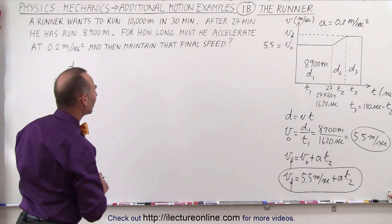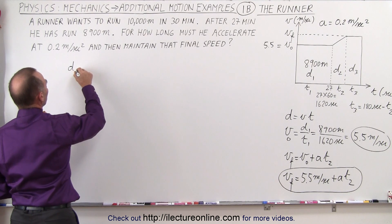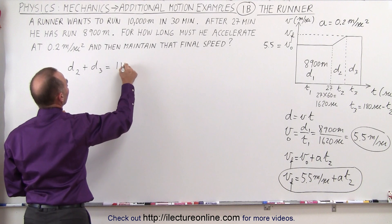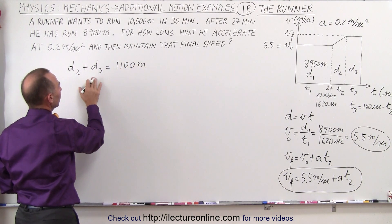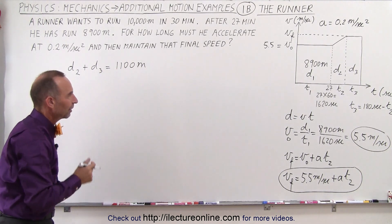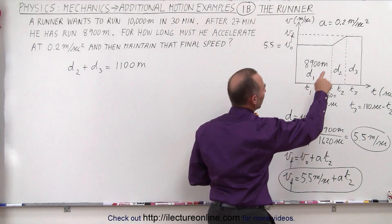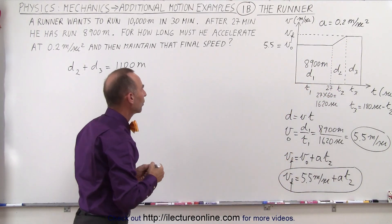Once we do that, we can say that distance 2 plus distance 3 is equal to 1100 meters. So now somehow we have to come up with expressions so that we add these two distances together and we cover 1100 meters. Now for distance 2, we realize that we are accelerating. So for that, we're going to need the following equation.